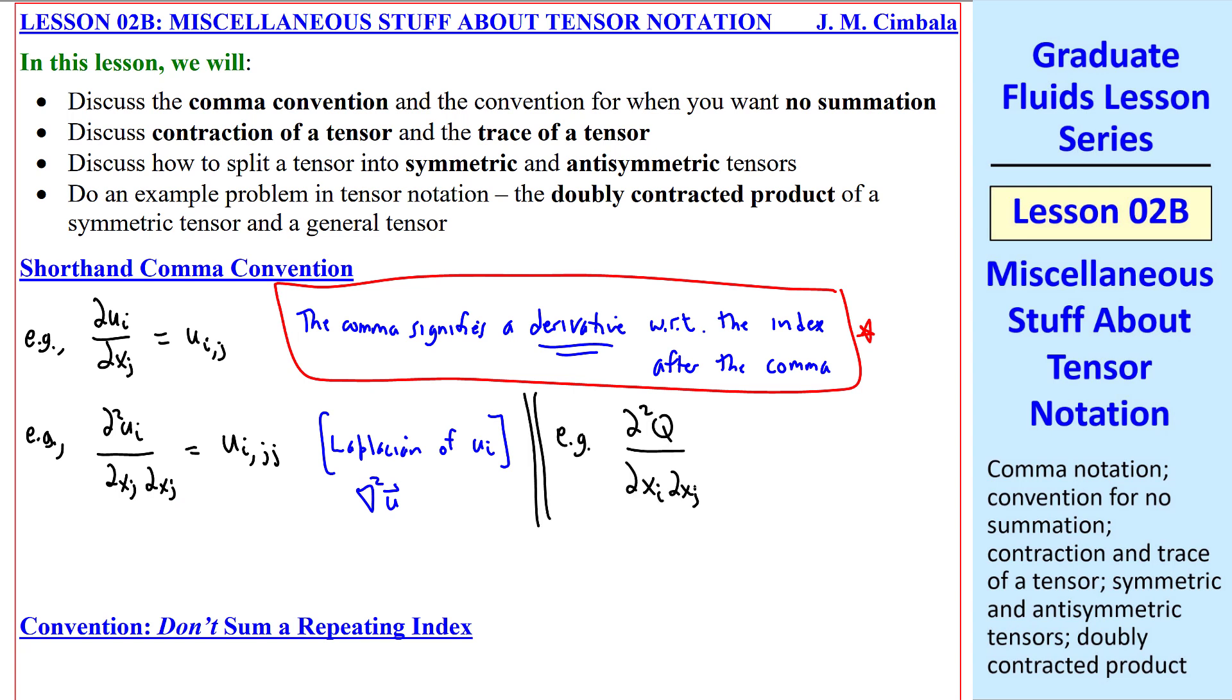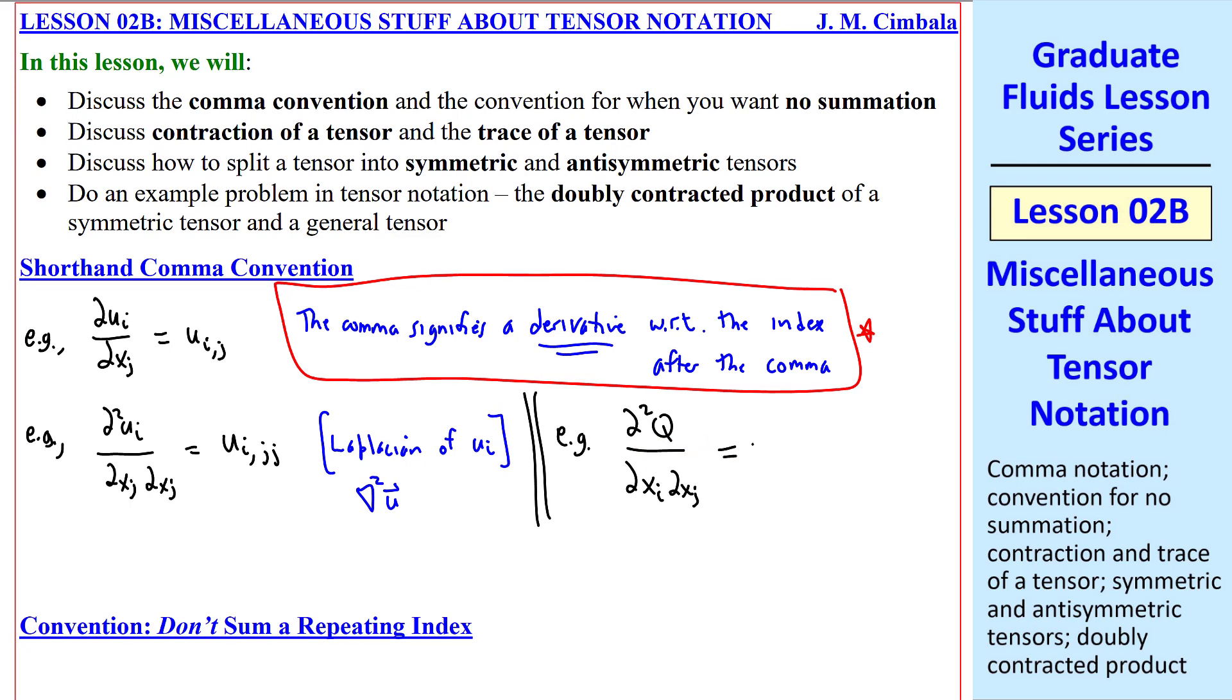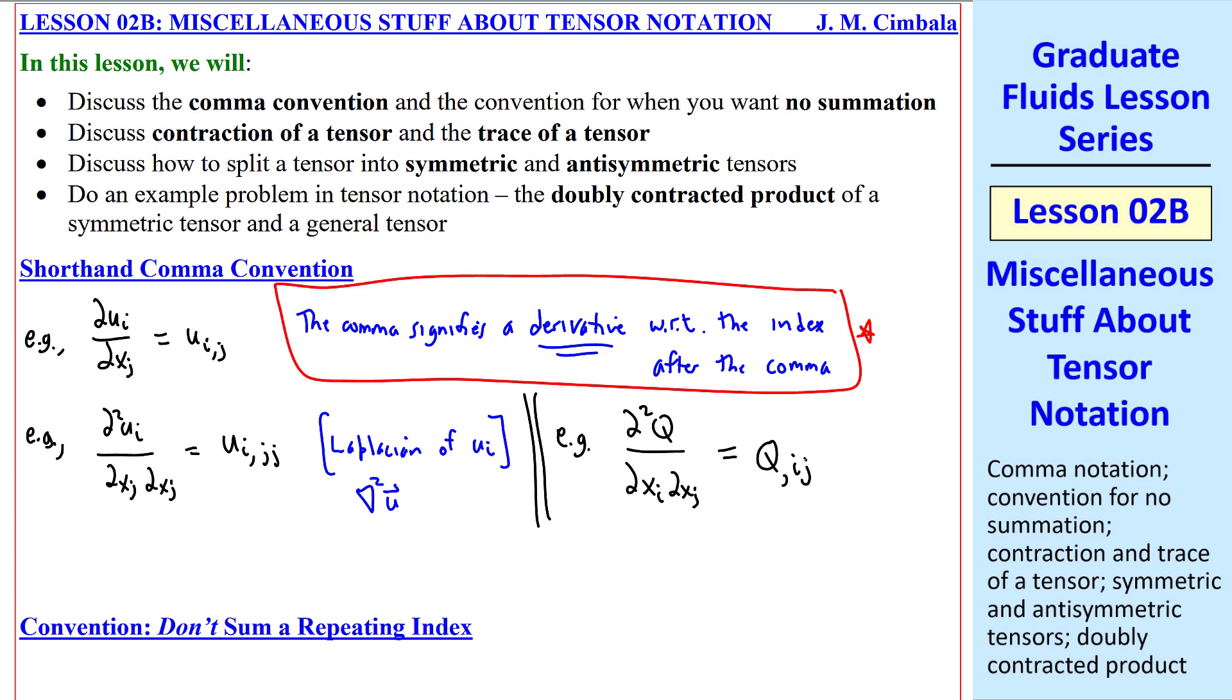As our third example, del squared q del xi del xj, where q is a scalar, in our shorthand comma notation, we would write q comma ij.